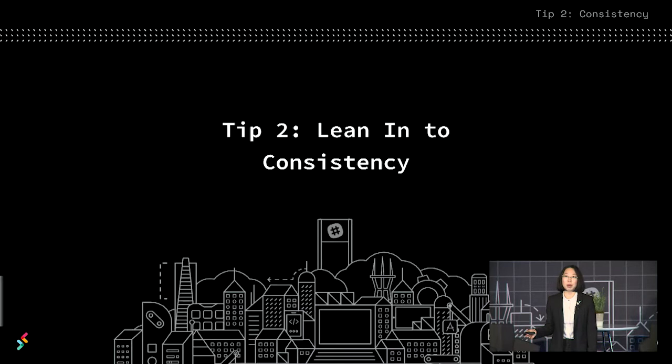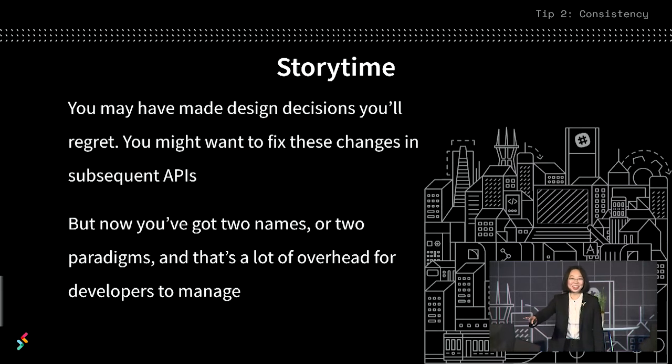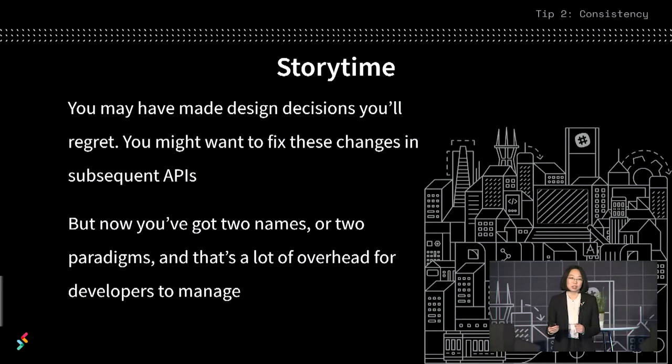The second tip is lean into consistency. I talked in the beginning about balancing the past with where you want to go in the future. You might have made design decisions in the past that you regret, and you might be super tempted to fix these mistakes in later releases of your APIs. But the result is that now you've got two names for a field, not one. You've got two paradigms, not one. That's a lot of overhead for developers to manage.